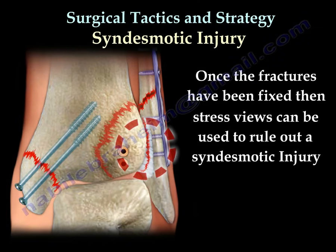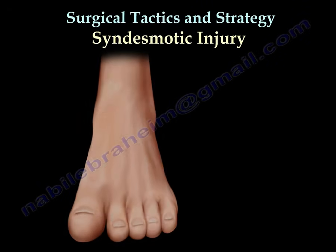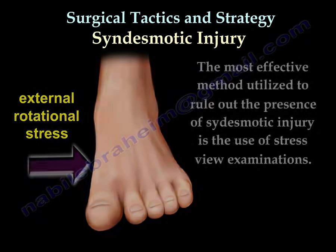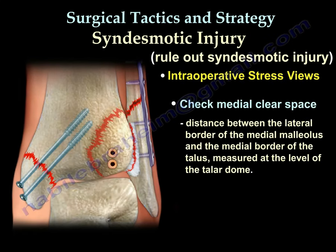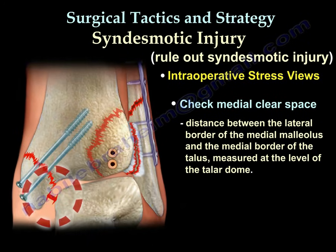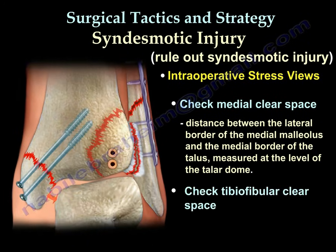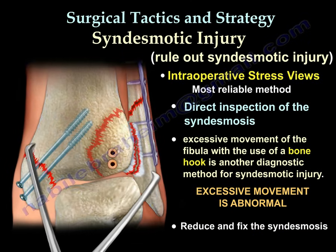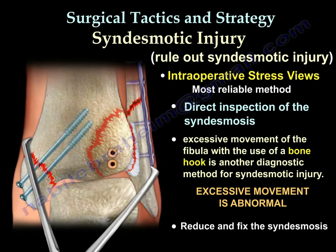Once all the fractures are fixed, we identify if there is syndesmotic disruption or not. We usually identify that by external rotation stress views in the operating room, and we check the medial clear space or the tibiofibular clear space under fluoroscopy. Although the stress views are the best, we always try to inspect the syndesmosis or do the bone hook technique for any excessive movement. Any excessive movement is abnormal. Once you see it, you need to reduce and fix the syndesmosis.